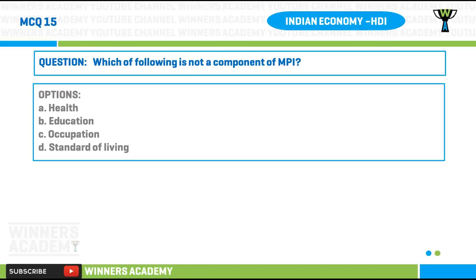Question number fifteen: which of the following is not a component of the Multi-dimensional Poverty Index? Options: A) health, B) education, C) occupation, D) standard of living.